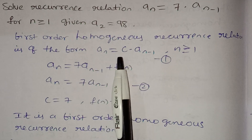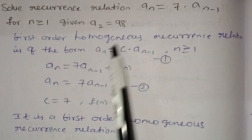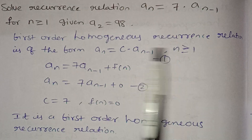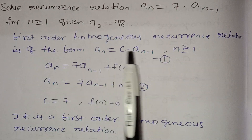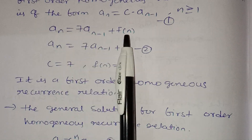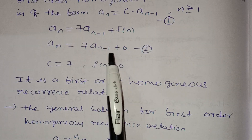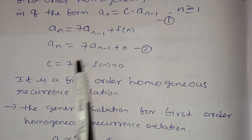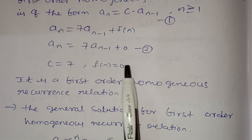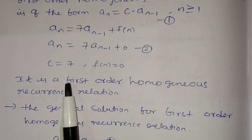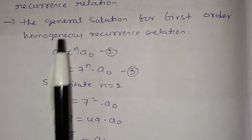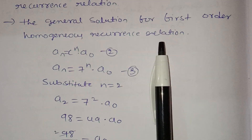So aₙ equals c·aₙ₋₁. The first order homogeneous recurrence relation is of the form aₙ equals c·aₙ₋₁, n greater than or equal to 1. Here f(n) equals 0, meaning the right-hand side has no extra term, so c equals 7 is a constant and f(n) equals 0 — that is why it is homogeneous.